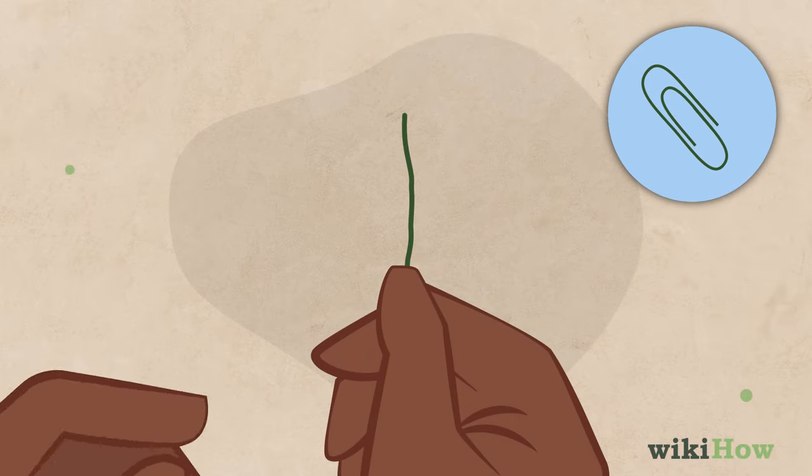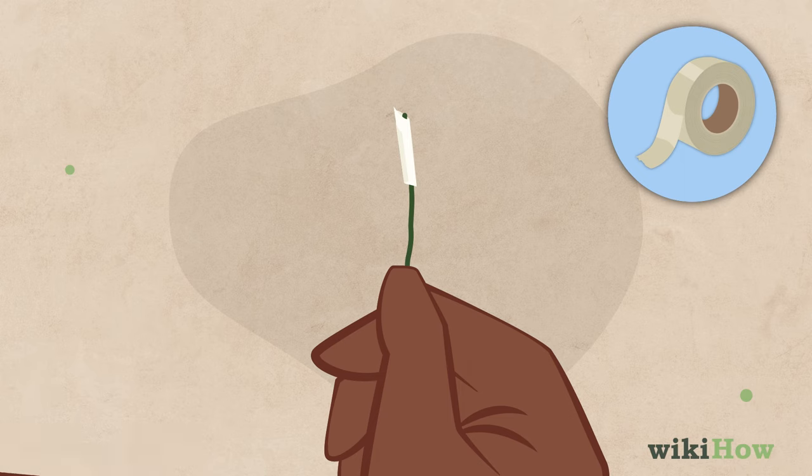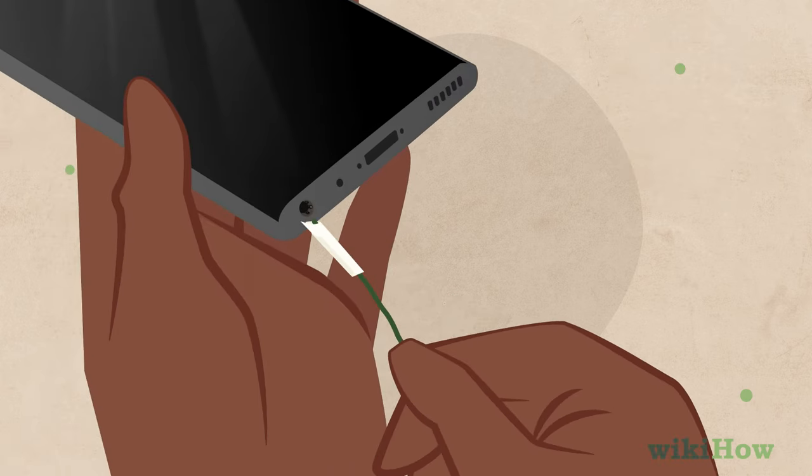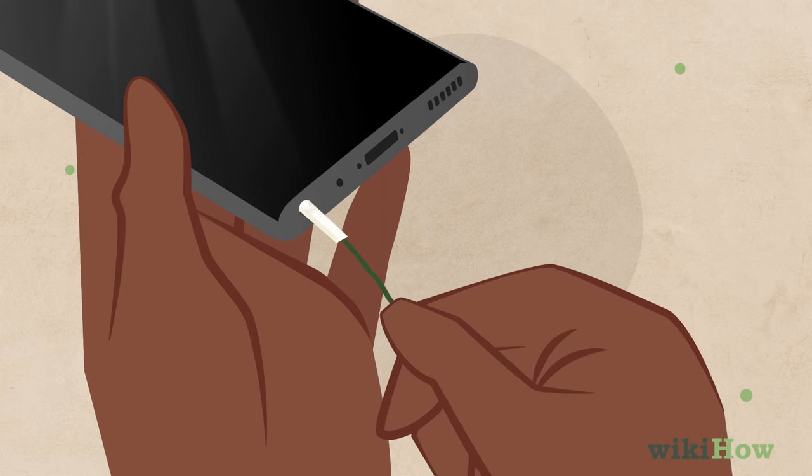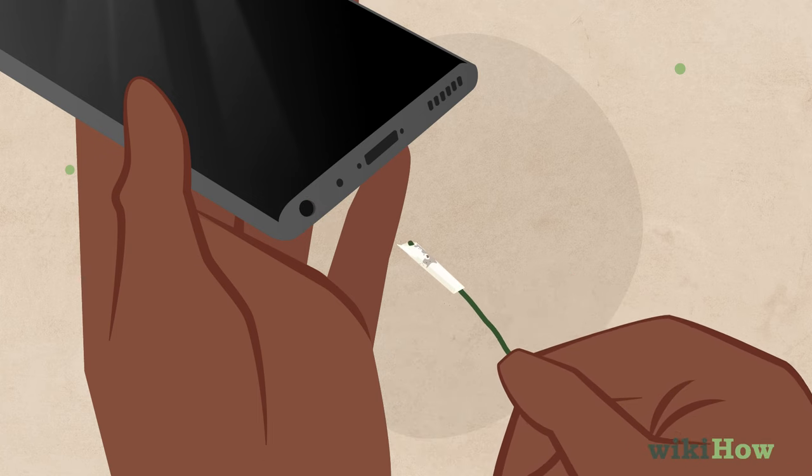Another option is to unfold a paperclip and wrap a piece of tape around one end with the sticky side out. Gently insert the taped end of the paperclip into the jack and turn it a few times. Lint, dust, and dirt inside the jack should stick to the tape when you pull it out.